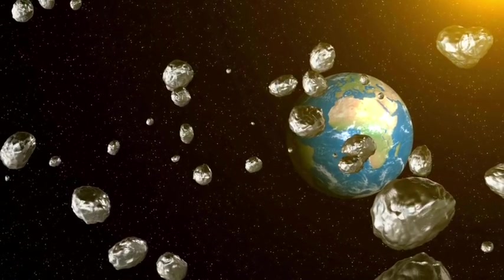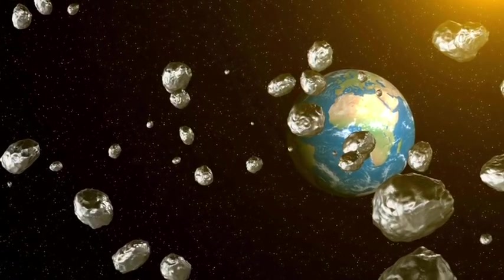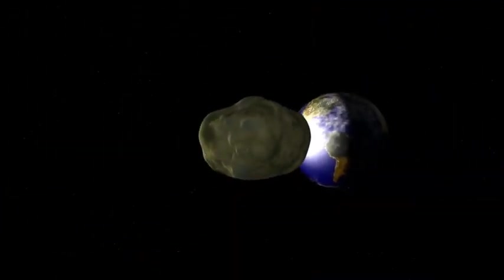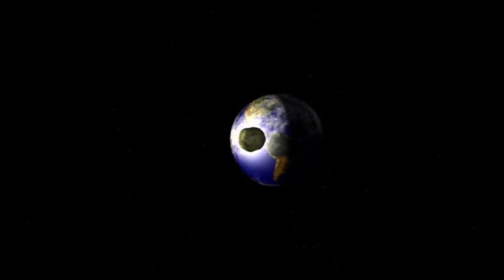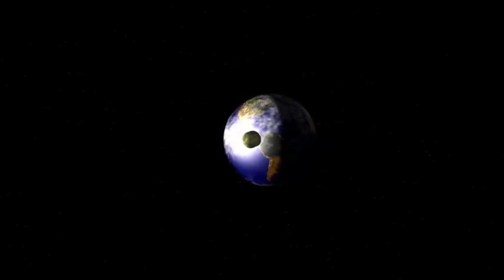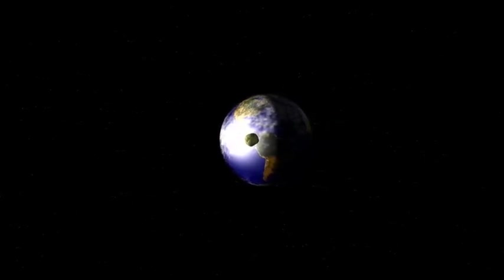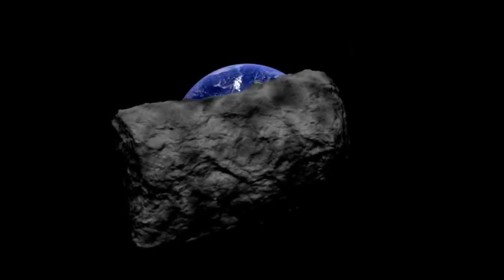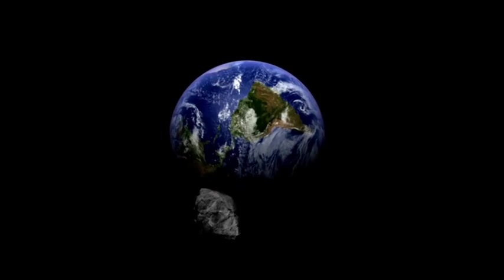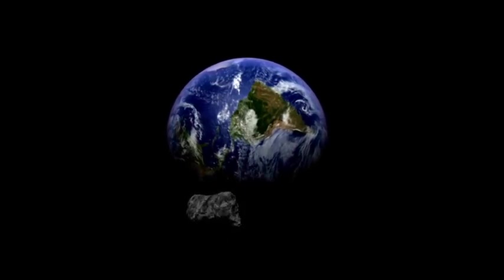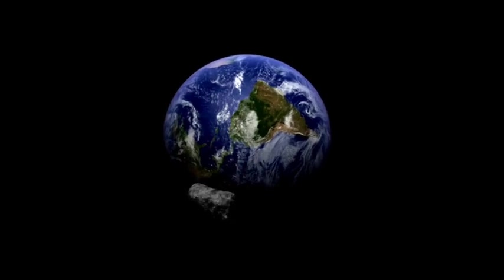The process of an asteroid becoming a mini-moon is a delicate balancing act, a gravitational dance between the object's speed and the pull of Earth. Earth's gravitational pull takes over the motion of an asteroid when it crosses a specific region in space close to our planet. If the asteroid's speed and trajectory align perfectly, it becomes temporarily trapped by Earth's gravity, beginning a brief orbit around us.